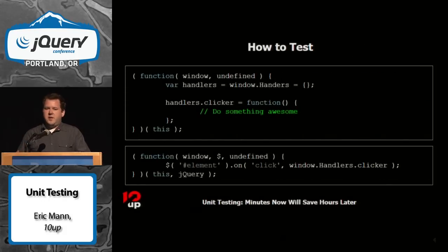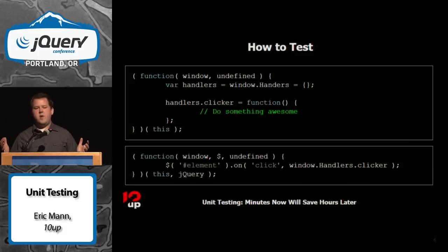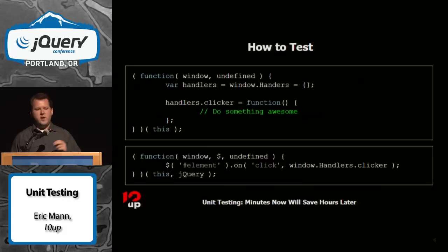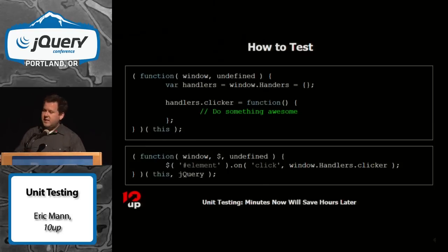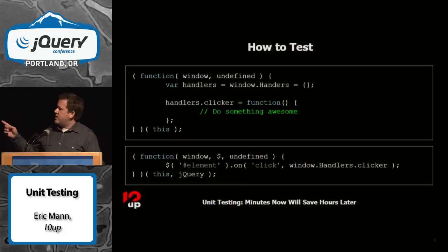To rewrite this code, break it out in a couple of ways. Add a handler object at the top of your page that holds all different click handlers and event callbacks. At the bottom of your page, inside a closure, wire your handlers up. This gives you very decoupled code — handlers defined in one place, the logic that wires them to events in another. You can now explicitly test window.handlers.clicker and make sure it actually does something awesome.